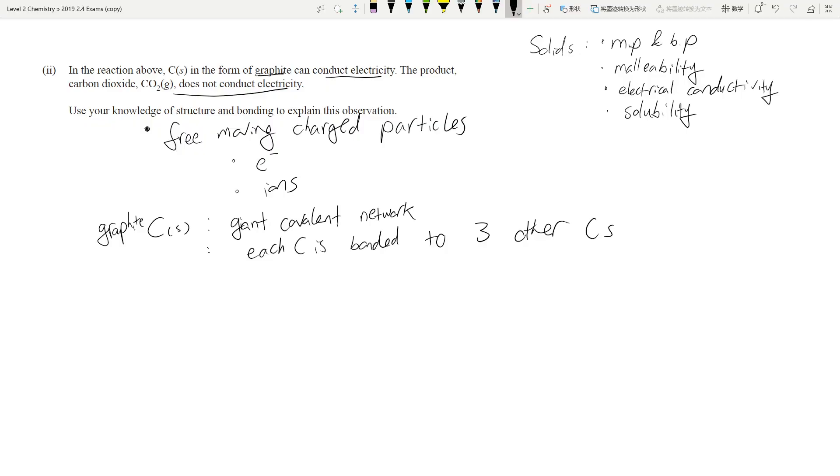Graphite, which is in the form of carbon, is a giant covalent network or extended covalent network. For this particular type of solid, you only have three examples: giant covalent network, diamond, and silicon dioxide. In this case, we're looking at graphite. And graphite is very unique. Each carbon is bonded to three other carbons.